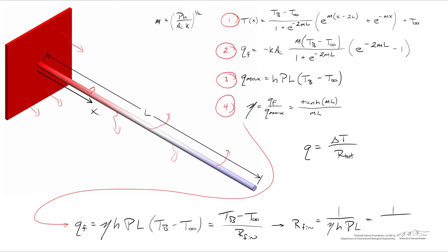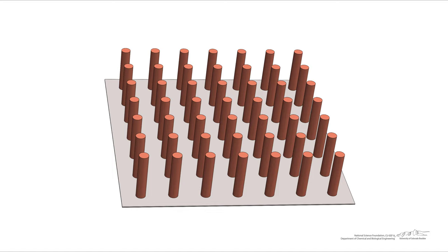When we compare this to the resistance of the base — which is just one over H times the area of the base — we find that the fin's efficiency acts almost like a correction factor. Now instead of considering just one fin, let's consider an array of fins.